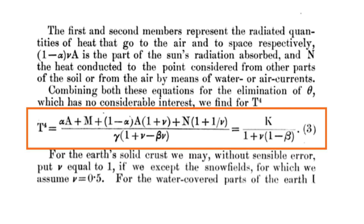From here, Arrhenius attempted to work out the proportions of infrared absorption by water vapor and CO2. But it was almost impossible to differentiate them based on the observational data in his days. Still, he published the paper anyway.